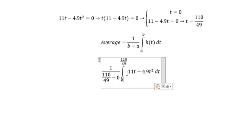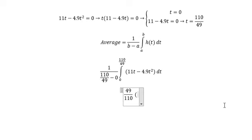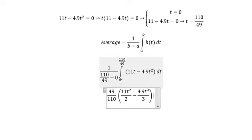Now we need to calculate this integral. So we will have 49/110 times the integral from 0 to 110/49 of (11t - 4.9t²) dt. The integral of t gives t²/2, and this one gives 4.9t³/3, with the boundary from 0 to 110/49.